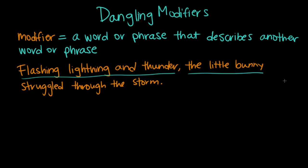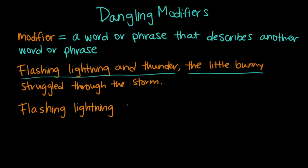I don't think I've ever seen a bunny with like lightning coming out of it or anything. Rosie, what is this modifier actually supposed to be modifying? So the modifier is actually supposed to be modifying the storm, because we've got lightning and thunder, flashing, lightning — all of those things describe the storm. So we need to fix this sentence: flashing lightning and thunder, the storm raged as the bunny struggled.